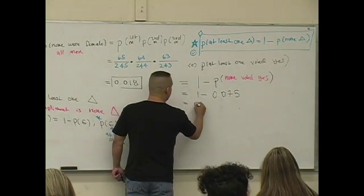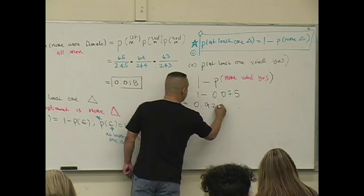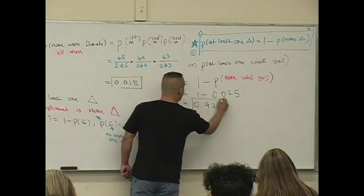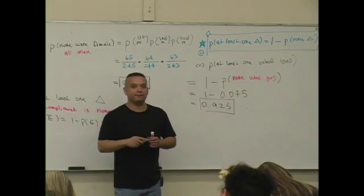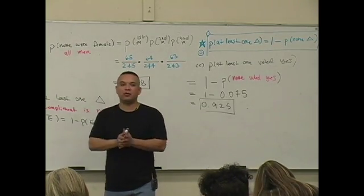What's one minus 0.05? What is it, Gabby? 0.925. So, the probability that at least one voted yes is 0.925. And I want to say this to you.